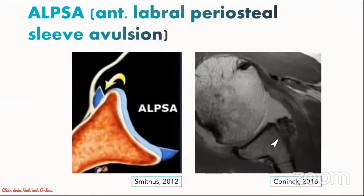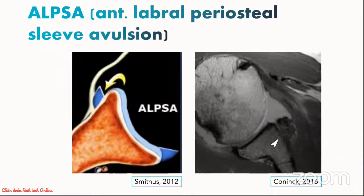Next, we move on to the ALPSA lesion, or the anterior labral periosteal sleeve avulsion. The ALPSA lesion is more common in chronic instability and may arise from a previous Perthes lesion. With repeated dislocation or subluxation, the labral ligamentous complex retracts medially within the intact periosteal sleeve, rolling up like a shirt sleeve. It can scar down to the glenoid neck and become immobile, as demonstrated in the axial imaging on the right where we see soft tissue scarring in the anterior aspect of the glenoid neck. Because diagnosis of ALPSA lesion is most certain when the inferior glenohumeral ligament can be identified, it might be better seen on an MRI arthrography.